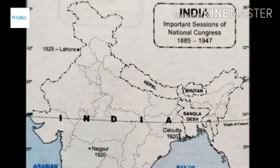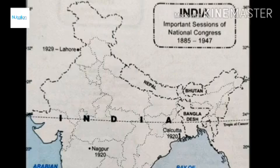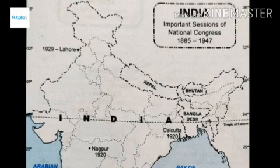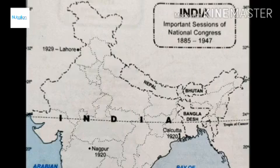Hello everyone, welcome back to my YouTube channel. In this video we will be discussing important maps of Class 10th Social Science. All in all there are 21 maps in your NCERT textbooks that you have to go through, and these 21 maps will fetch you 6 marks in your board examination — 2 marks of history and 4 marks of geography.